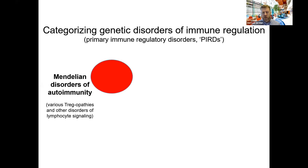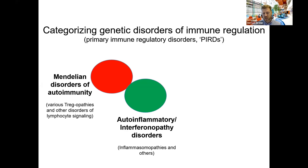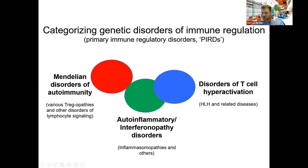Some disorders I call Mendelian disorders of autoimmunity — genetic problems that primarily affect the adaptive immune system and lead to autoimmunity. There's another category: auto-inflammatory or interferonopathy disorders, primarily affecting the innate arm of the immune system. And then there's a distinct group I call disorders of T-cell hyperactivation, which affect the adaptive immune system — not a question of specificity, but of controlling the intensity of immune activation.